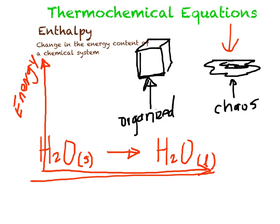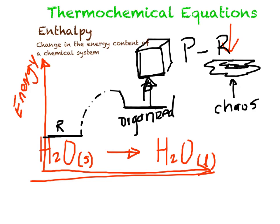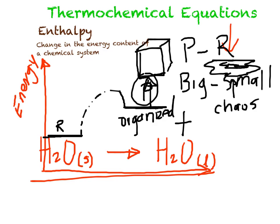Now let's see what happens when the opposite occurs. Let's say you start with a small amount of energy — your initial state, your reactants — and after the chemical process takes place, you end up with a higher energy state at the end, your products. You subtract the products minus the reactants in terms of energy. You have a big number minus a small number, which gives you a positive total. When you have a positive delta H, that means your reaction is endothermic.